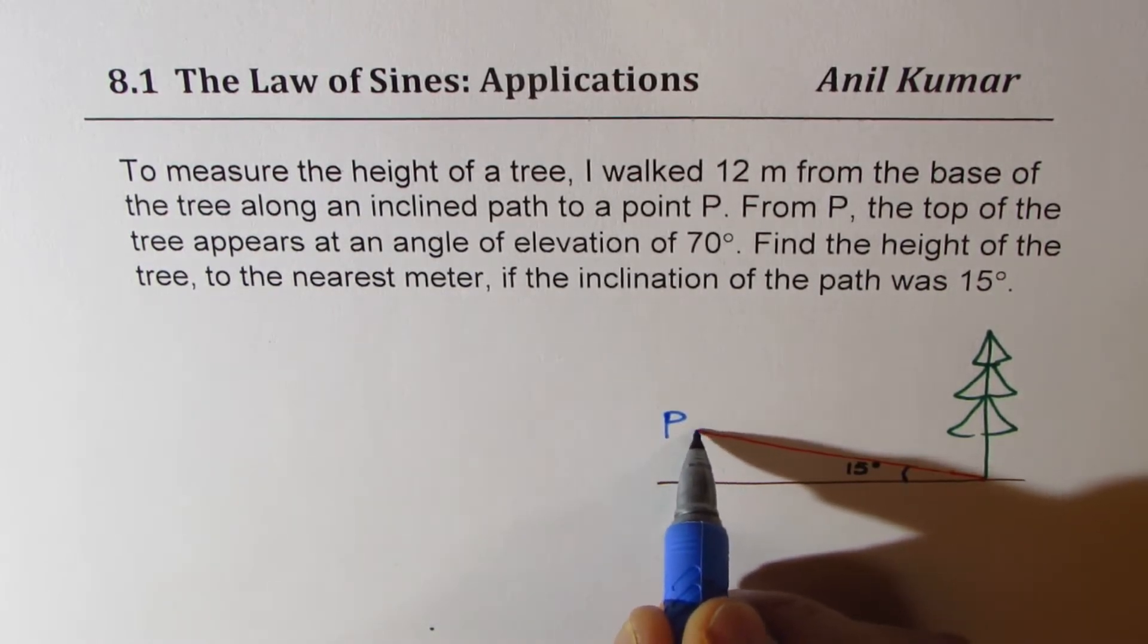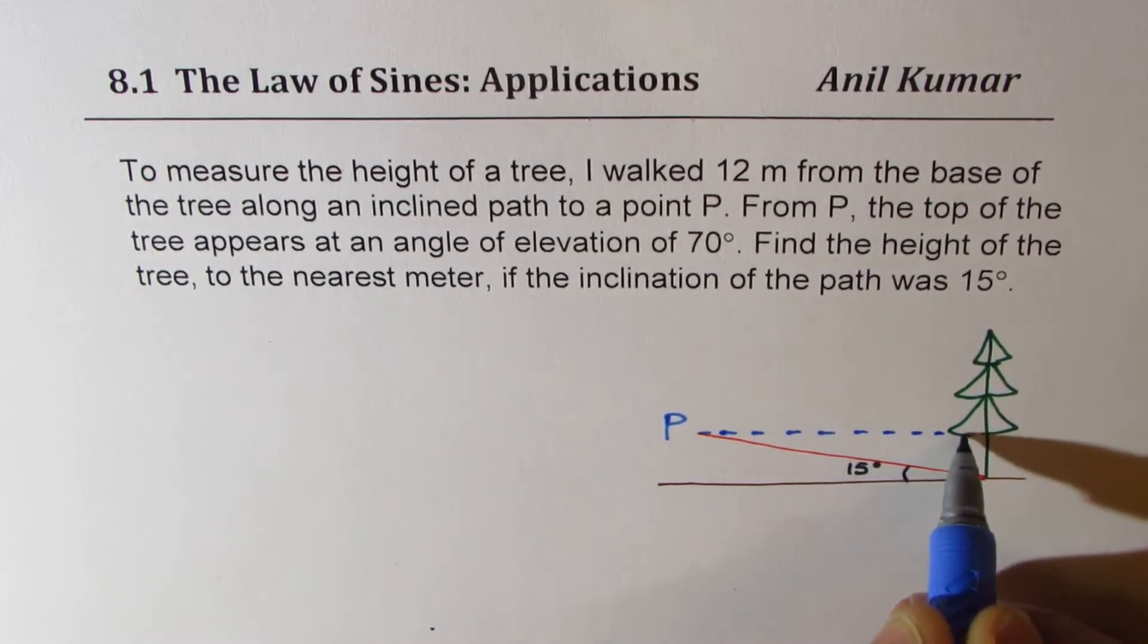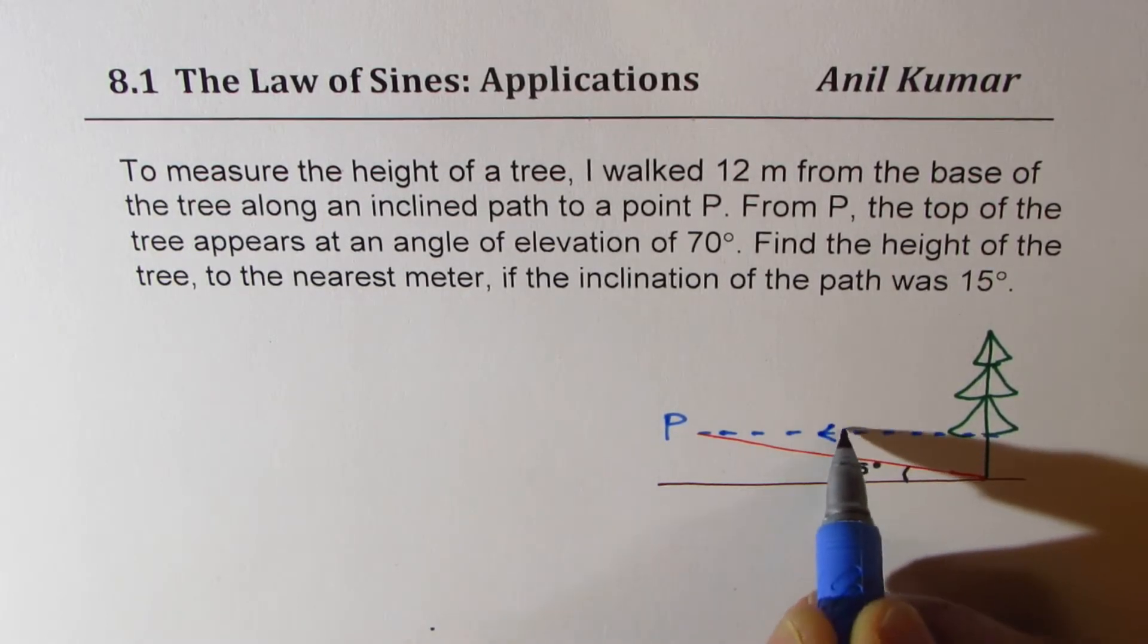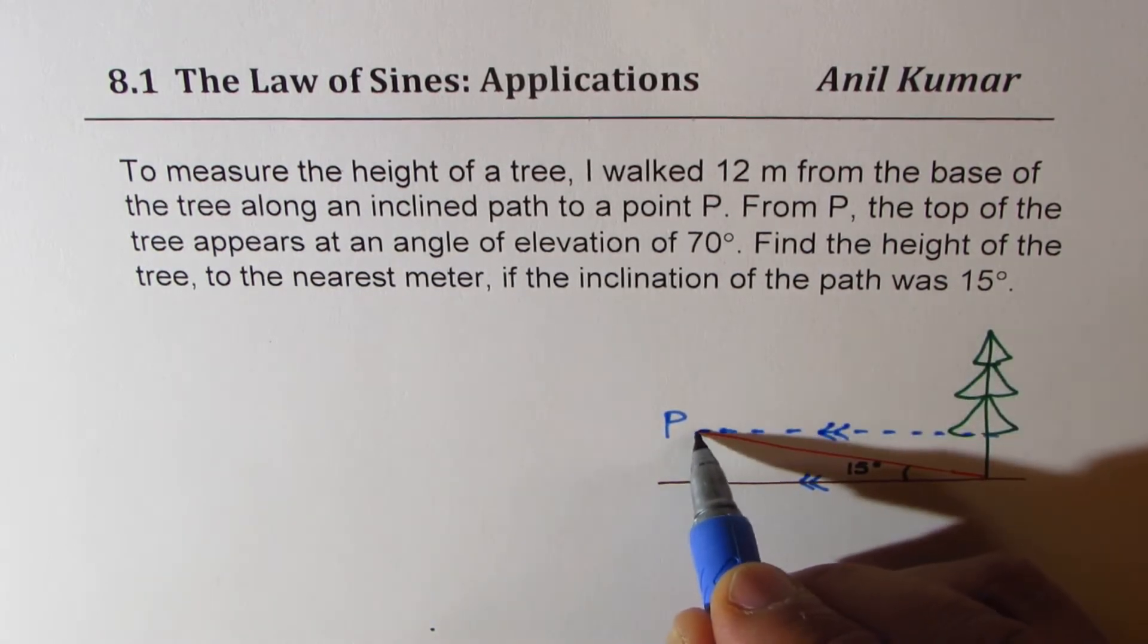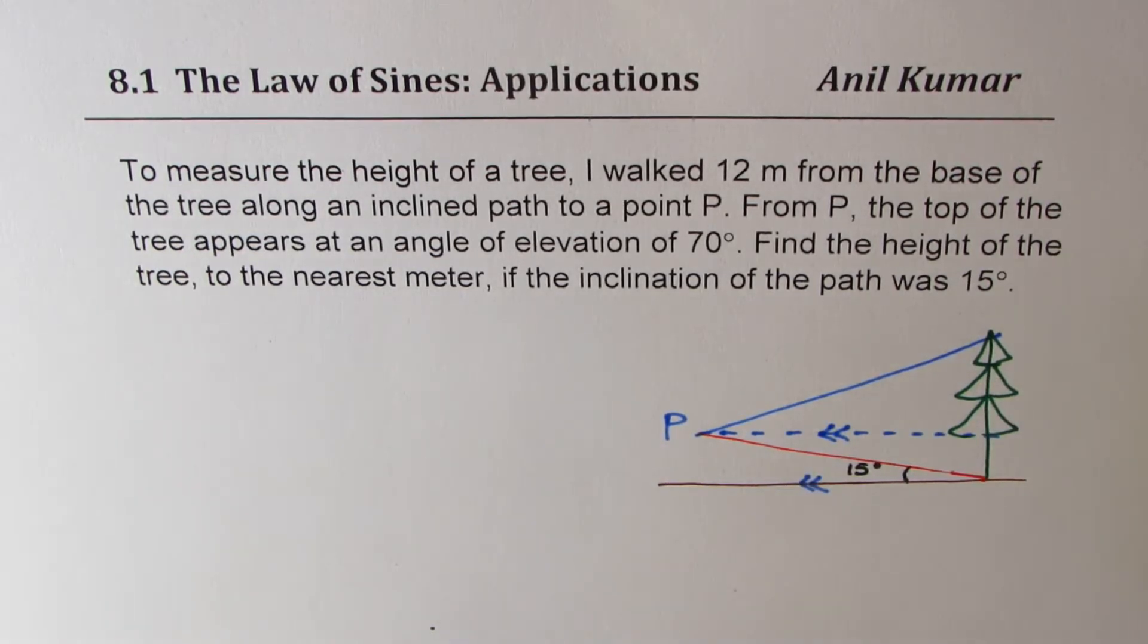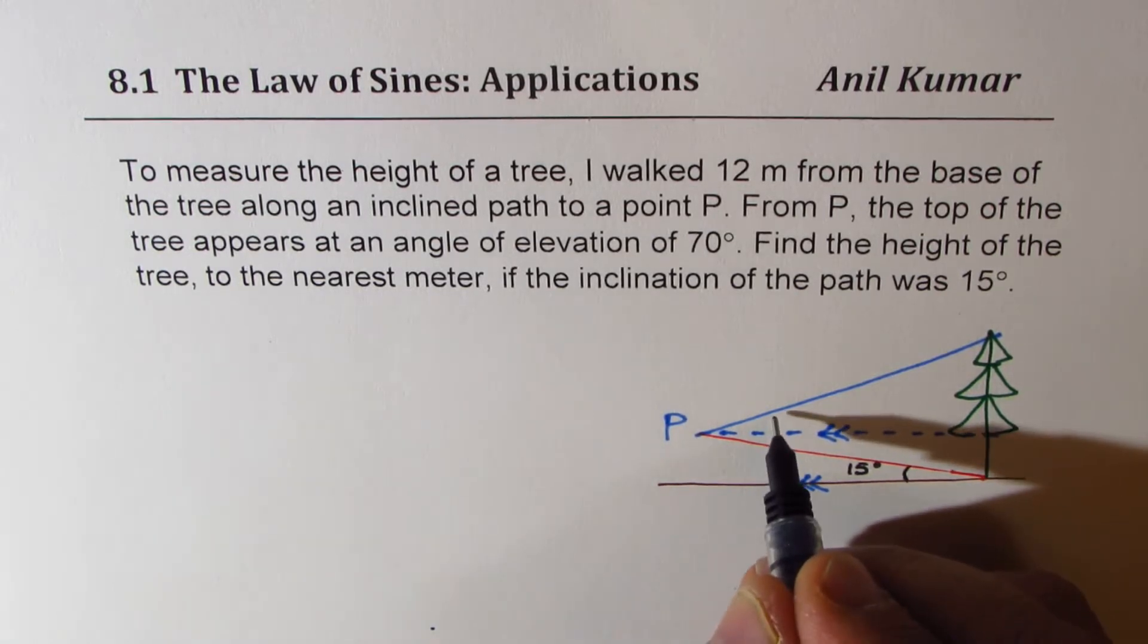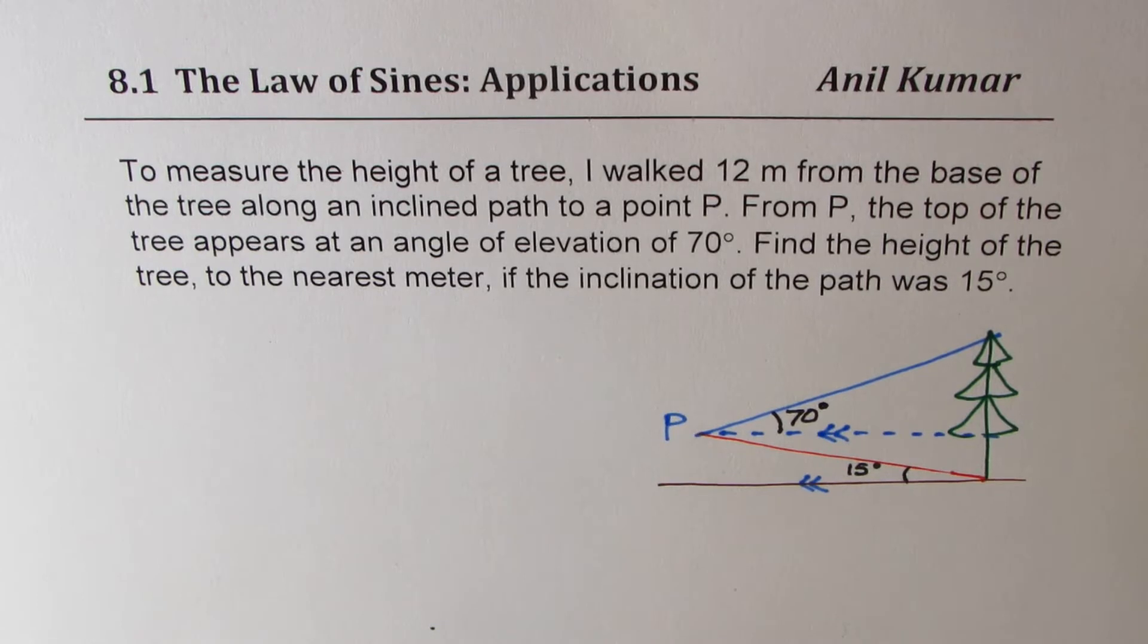What we are given here is that the angle of inclination is 15 degrees. So this angle here is 15 degrees. We are also given that angle of elevation to the top of the tree is 70 once we reach a point P. Let's say this is the point P. The angle of elevation is always from the horizontal, so this line is horizontal, parallel to the ground. From here, the angle of elevation is 70 degrees. And we have to find the height of the tree, that is this much distance.